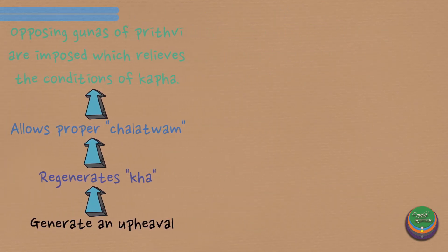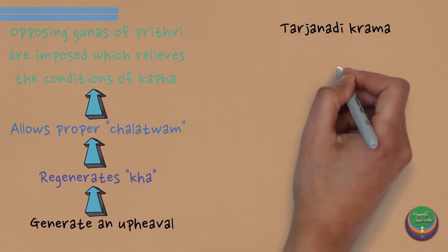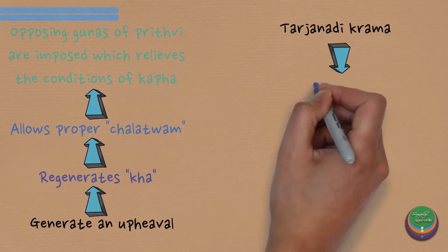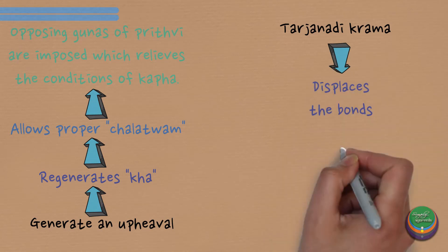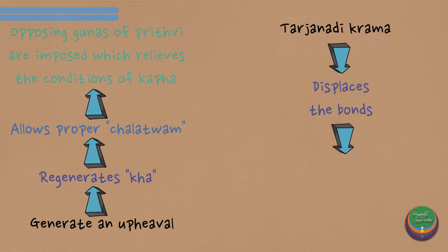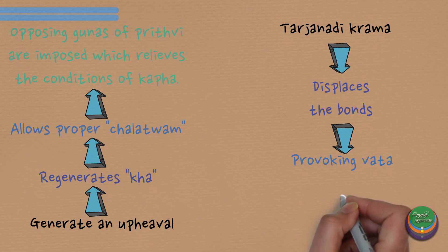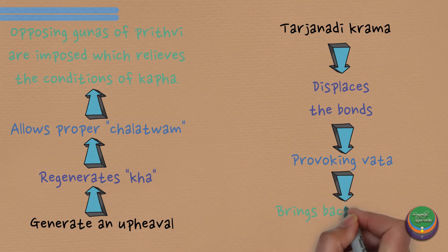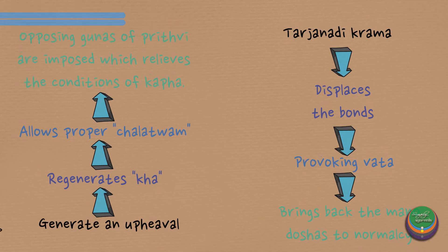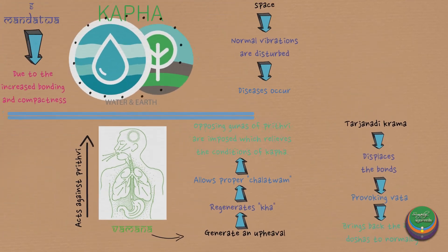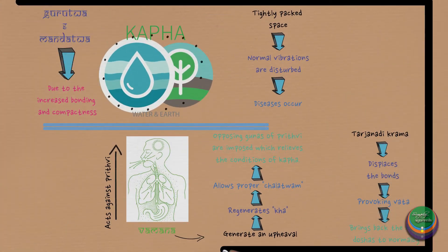Tarjanadhi Krama, explained in Unmadachikitsa, also does a similar action of displacing the bonds by provoking Vata. This breaks up the Manodoshas and brings back the normal functioning of the Manas.